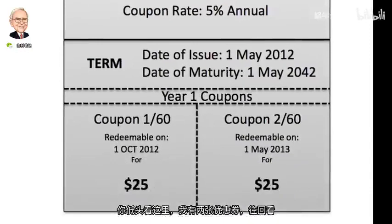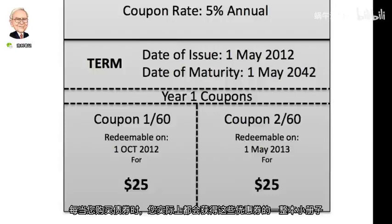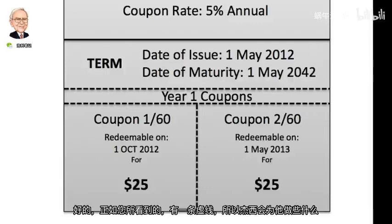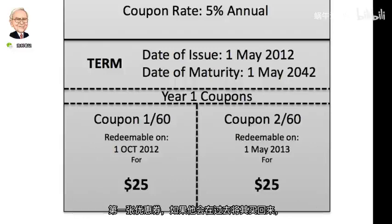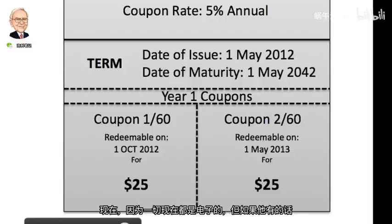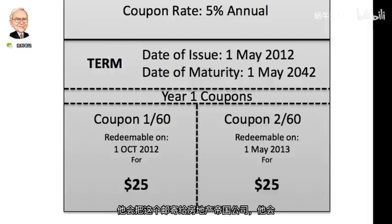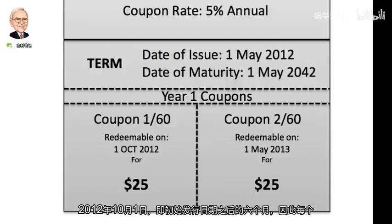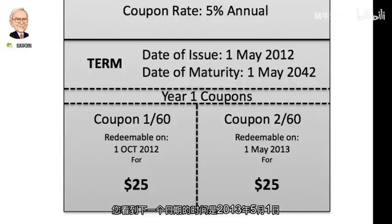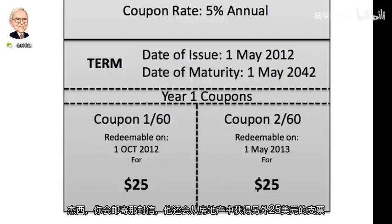At the bottom of the bond I have two coupons. Back in the olden days, whenever you'd buy a bond, you'd actually get a whole booklet of these coupons. What Jesse would do for his first coupon is cut it out along the dotted line and mail it to the Real Estate Empire company. He would receive a $25 check back, just as long as he mailed it in after 1 October 2012, which is six months after the initial date of issue. For the next coupon dated 1 May 2013, Jesse would mail that in and get another $25 check.